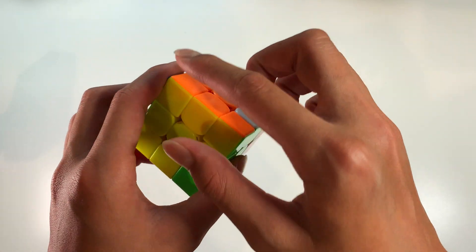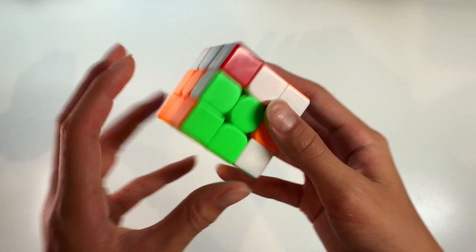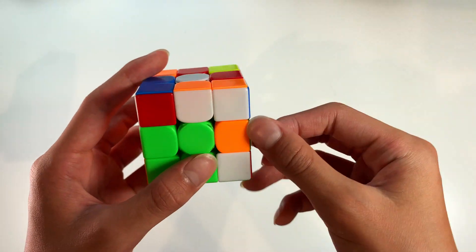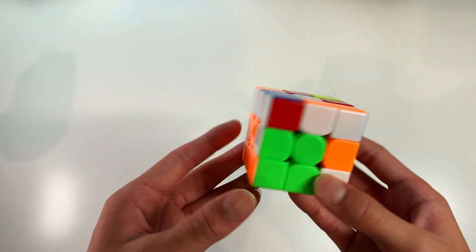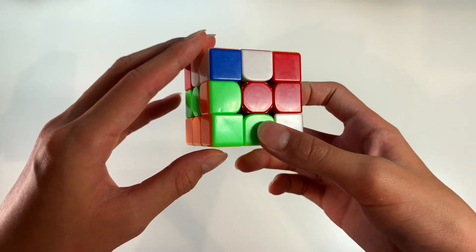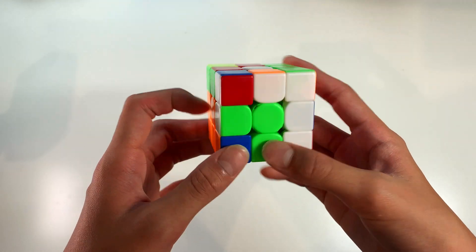So the first case is when you have a corner that is solved in your left slot and then in the right slot you have the edge that needs to go here except that it's flipped. What a lot of people do is they can just do a wide U and that will pair them up. Then they can just take it out and then insert it.